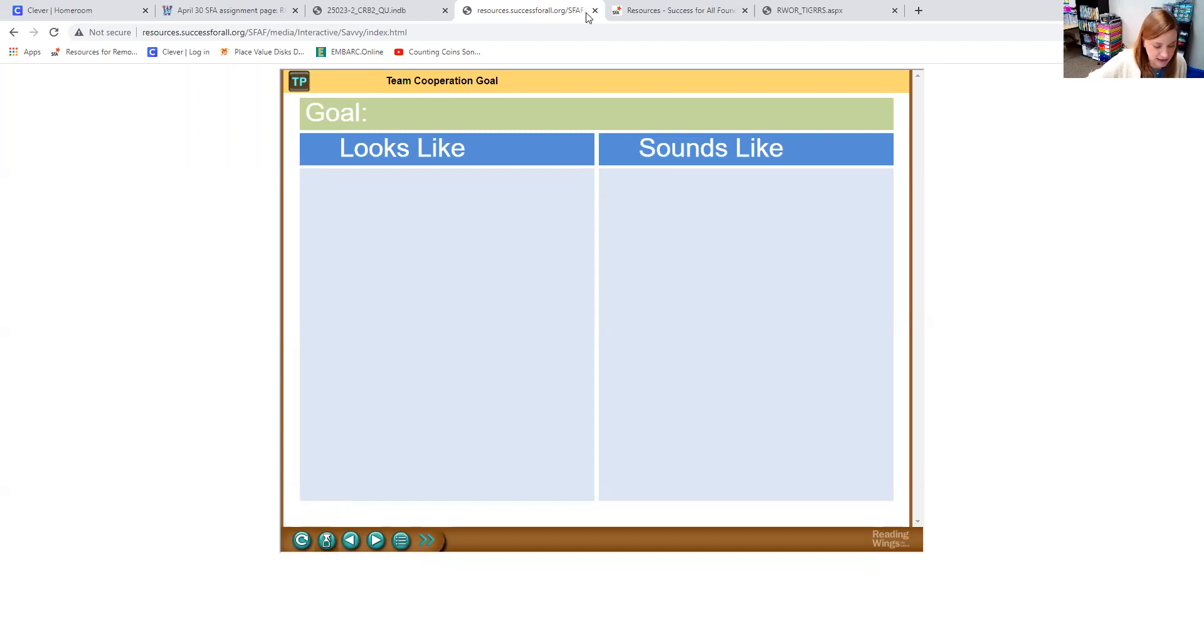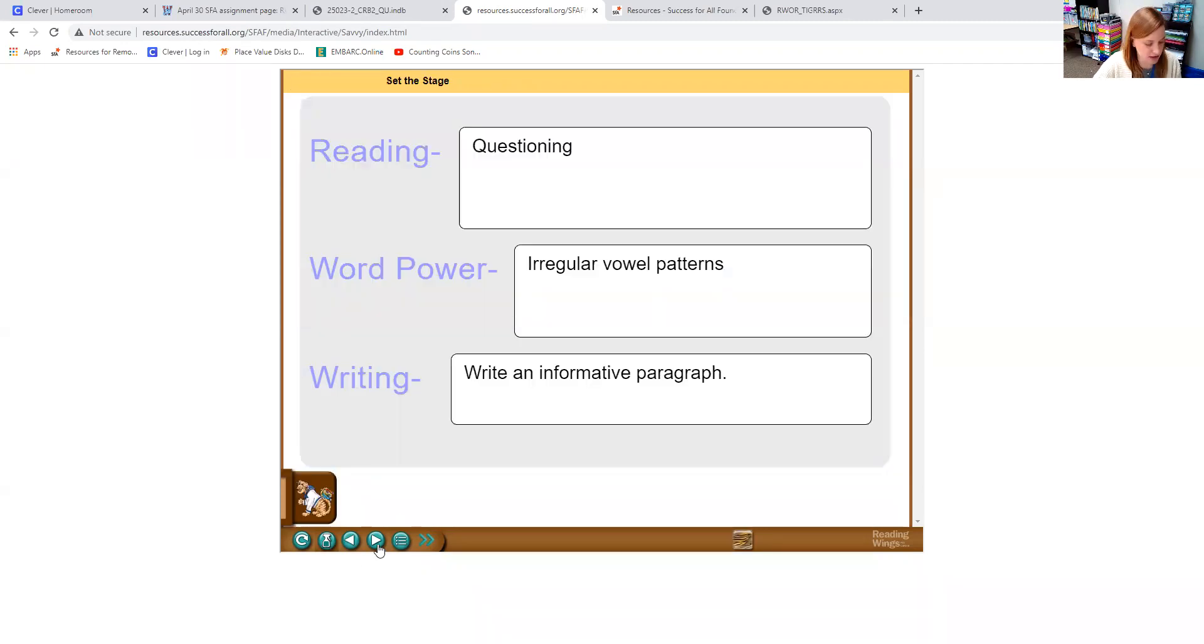When you complete tasks, that means you are finishing things completely and not halfway and you are just checking to make sure that you are staying on top of things. We are still working with questioning, our word power is irregular vowel patterns, and then writing we're going to be writing an informative paragraph.